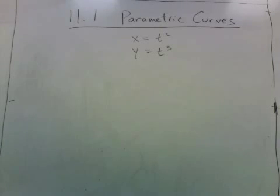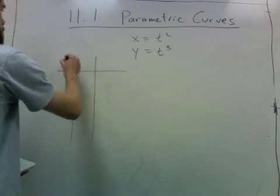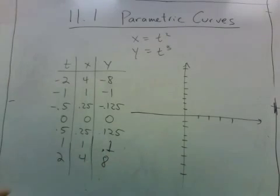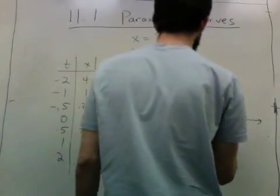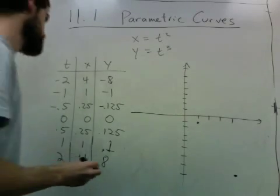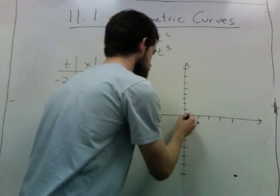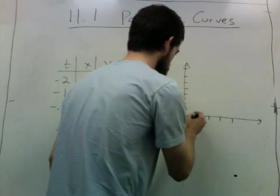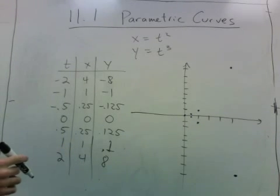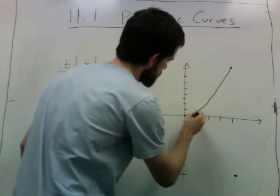Here's yet another example. Let's try to plot it. The first point is (4, negative 8), then (2, 1), (1, 2), and so on, with additional points like (1.25, negative 1.25). The curve ends up looking like this.